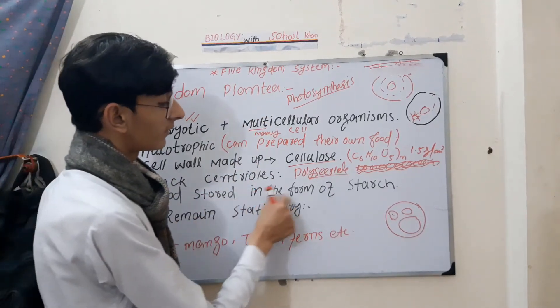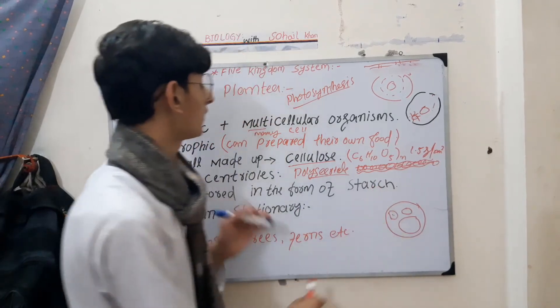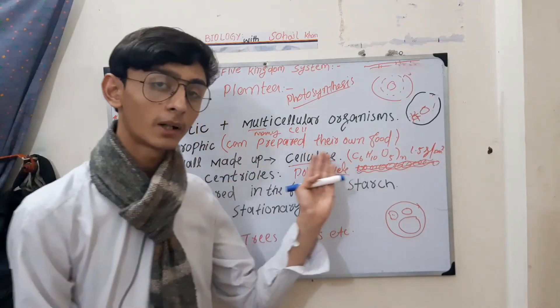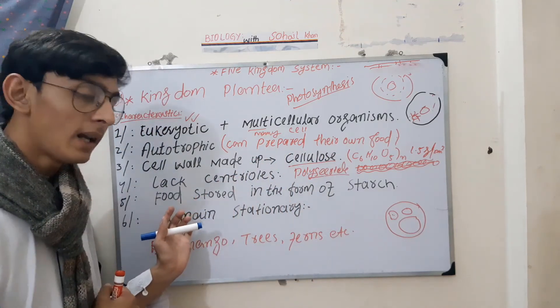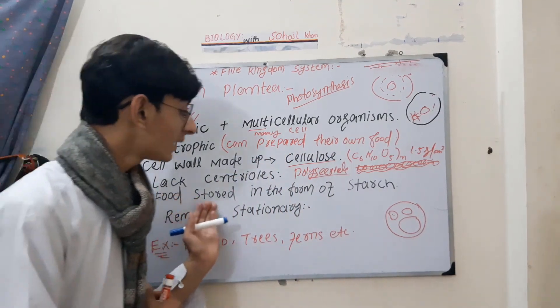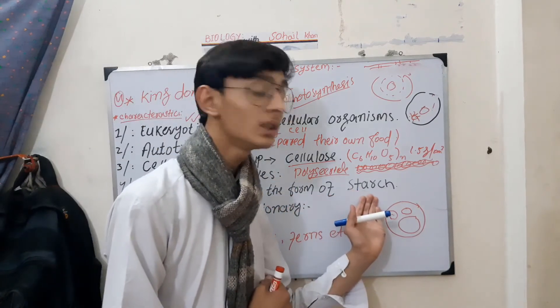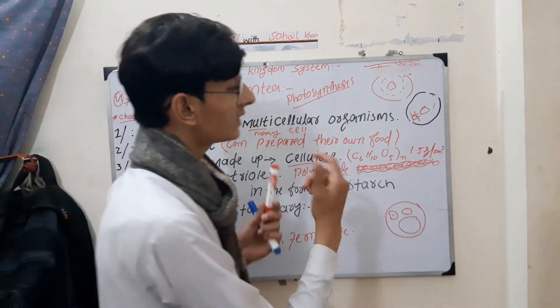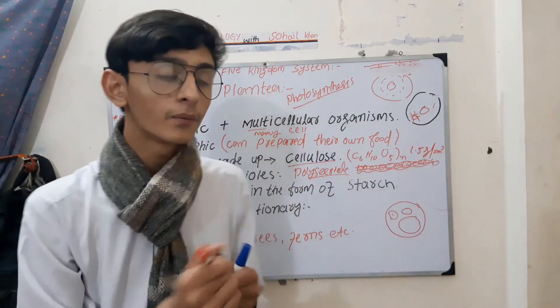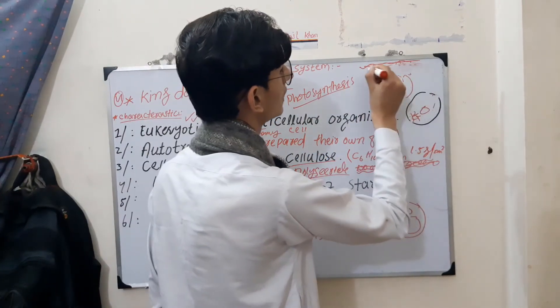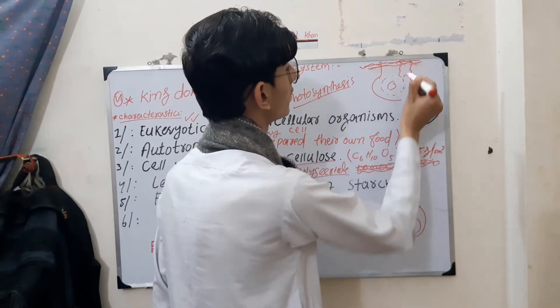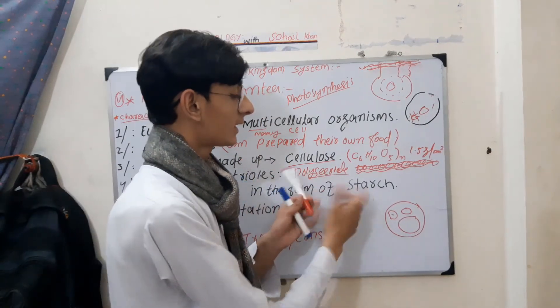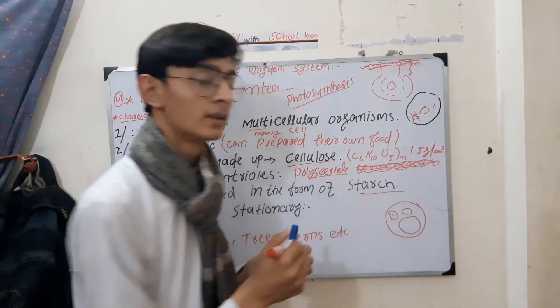Food is stored in the form of starch. Plant cells store food as starch. This is an essential characteristic of plant cells - they store food. When they need energy, they will use this stored starch from the plant cells.